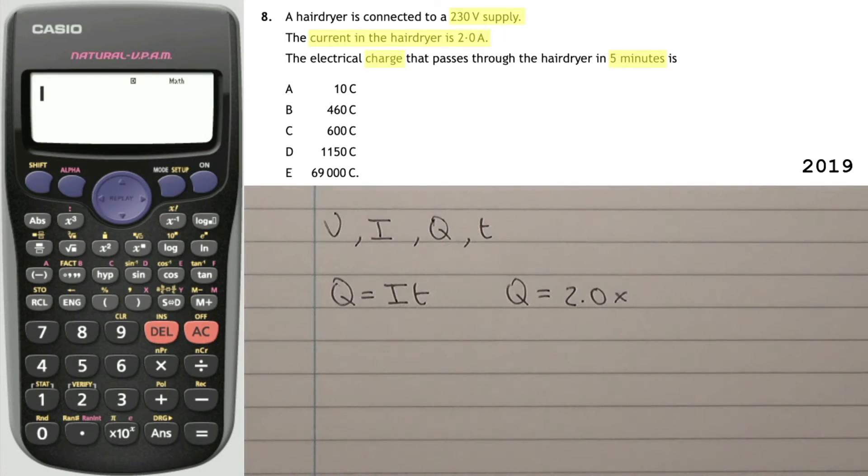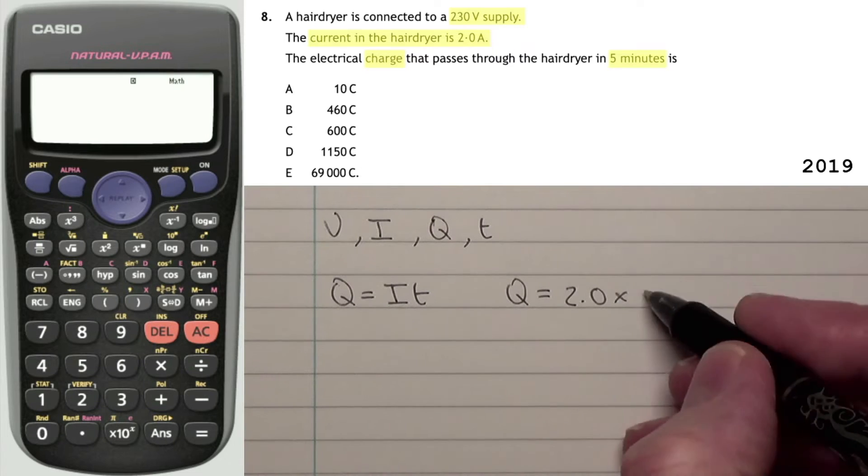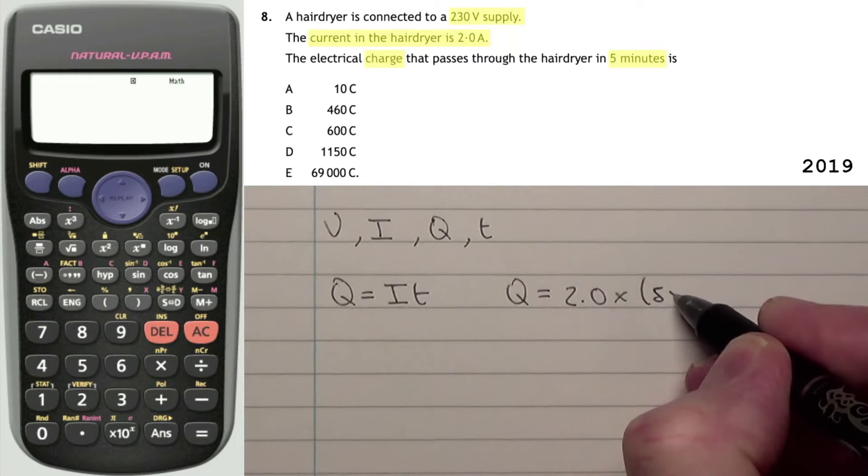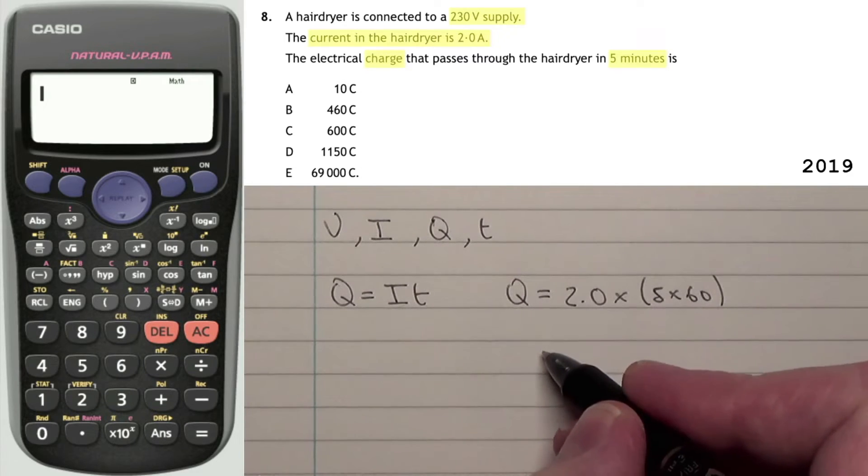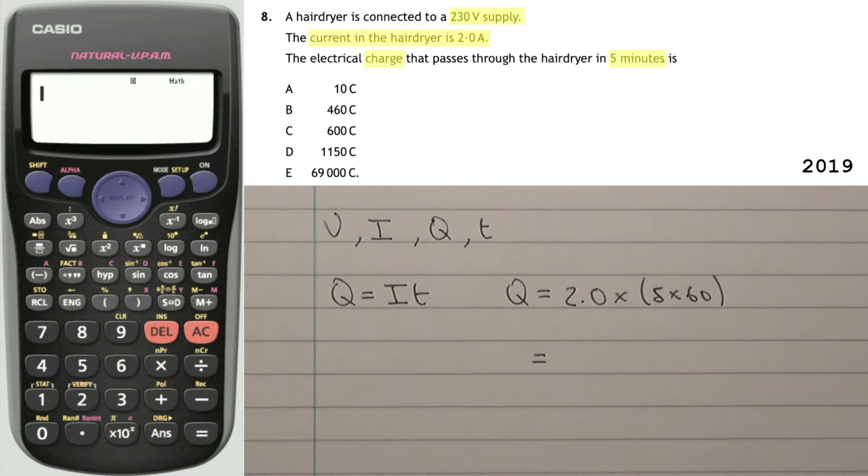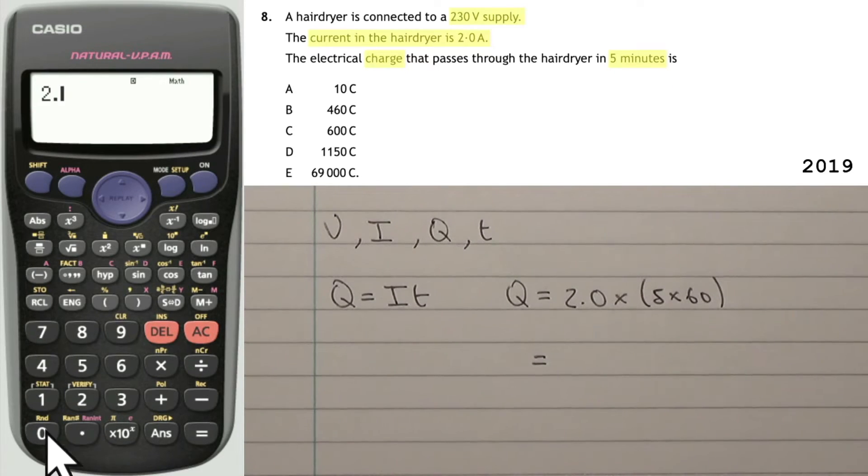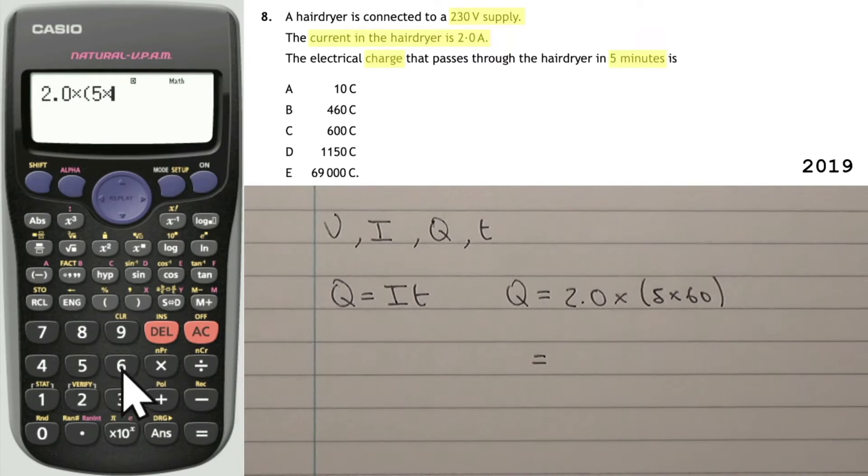And time. Well, when we saw time in that table, it doesn't say that time is in minutes. It actually says that time should be in seconds. So that 5 minutes is going to have to change. Remember, that table needs to be memorized, not just the symbols which are used in the equation, but also the units. Now 5 minutes would be 5 lots of 60 seconds. And that would then give us... Let's look that up. I'm going to type that into a calculator. So 2.0 multiplied by, in brackets, 5 times 60. And what do I get? I get 600.